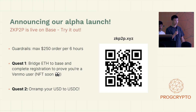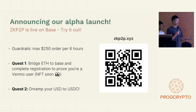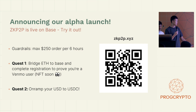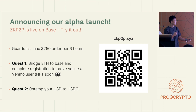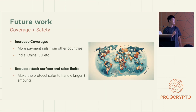If you're a Venmo user, please try it out. There are currently some guardrails in place, such as a $250 order limit per six hours for our alpha launch. I've added two quests for you guys to complete: Quest one is to bridge ETH to Base and complete the registration flow to prove that you're a unique Venmo user — there may or may not be an NFT coming soon. Quest two is to on-ramp your USD to USDC; there's liquidity there for you to take.